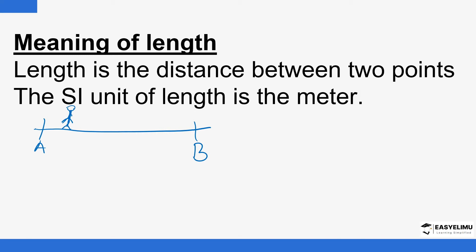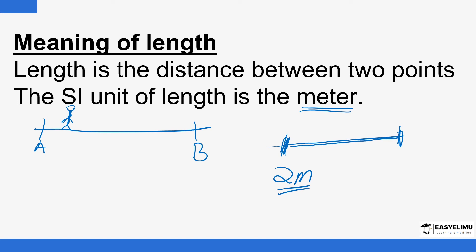The SI unit of length is the meter. A meter could be the length of a meter rule — the one used in physics. That size is called a meter. If you talk of two meters, that is two of that size. So the standard unit of measuring length is the meter. A meter is approximately the size of a meter rule.